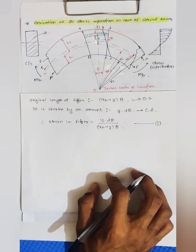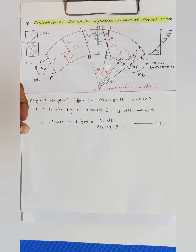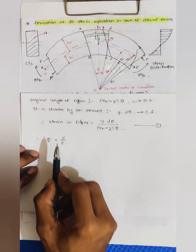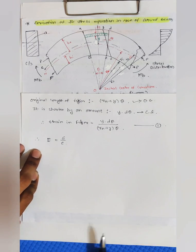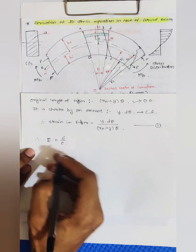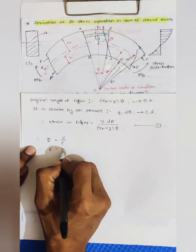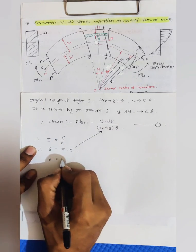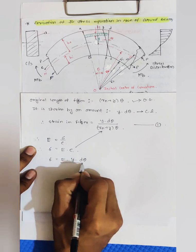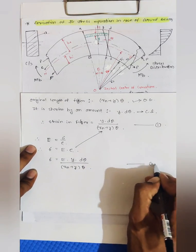In the assumption of curved beams, one assumption is that it obeys Hooke's law. According to Hooke's law, modulus of elasticity E equals stress upon strain, so stress equals E into strain. Putting the strain value, stress σ = E·y·dθ / ((rn + y)·θ). This is equation number two.